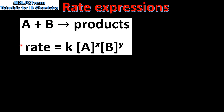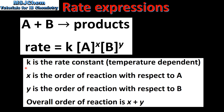From this we can write the rate expression or the rate law for the above reaction: rate equals K, the concentration of A raised to a power x, multiplied by the concentration of B raised to a power y. K is the rate constant, which is a constant for a particular reaction at a specified temperature, therefore it is temperature dependent. X is the order of reaction with respect to A, Y is the order of reaction with respect to B, and the overall order of reaction is X plus Y.